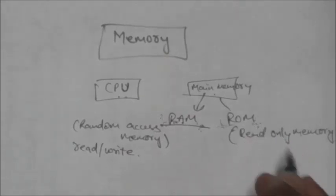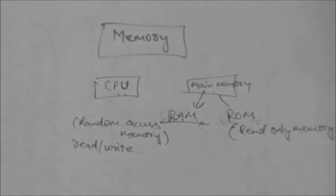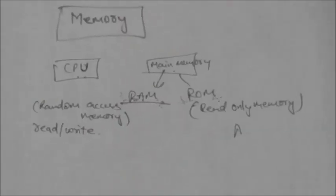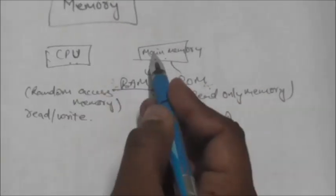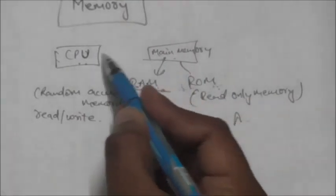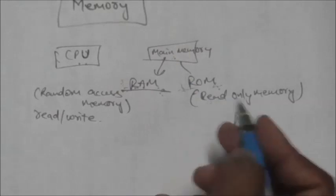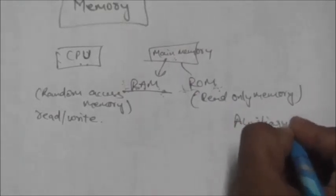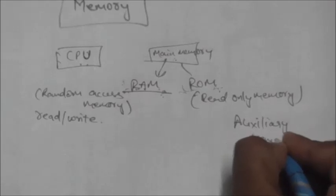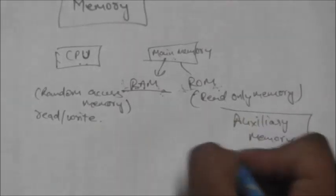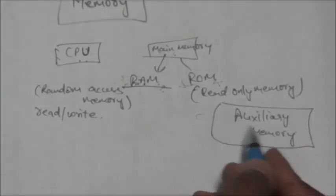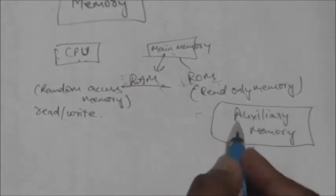The programs and data which are not required by the CPU are not kept in main memory. They are kept in auxiliary memory. The auxiliary memory stores all the data in a computer system.